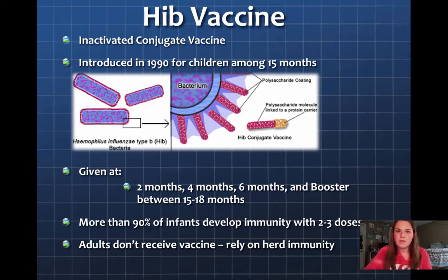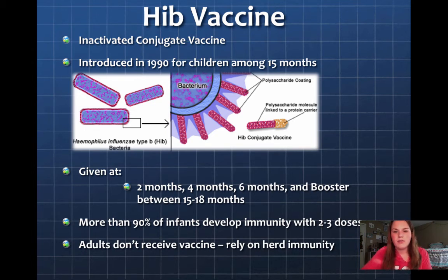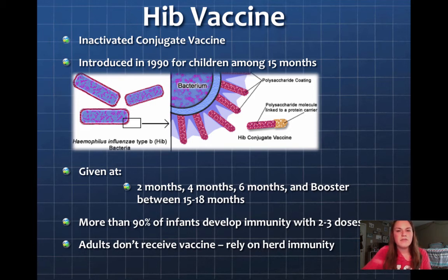The HIV vaccine is an inactivated conjugate vaccine, introduced in 1990 for children up to 15 months. The polysaccharide is key to how the vaccine works. It is given in three main doses — at two months, four months, and six months — and then a booster between 15 and 18 months is recommended. More than 90% of infants who receive these dosages become immune. Adults do not receive this vaccine, so we rely on herd immunity, which is why vaccination is so important.